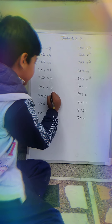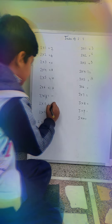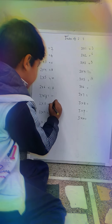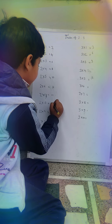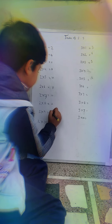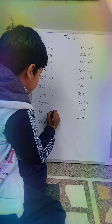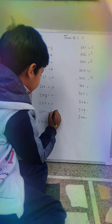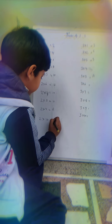2 times 7 is 14, 2 times 8 is 16, 2 times 9 is 18, 2 times 10 is 20.